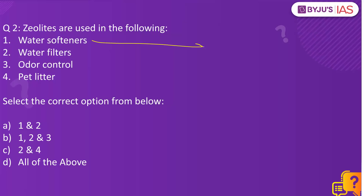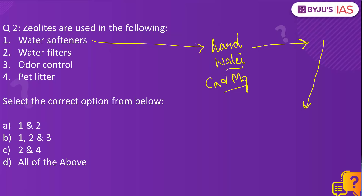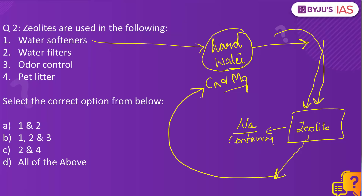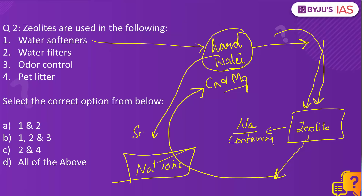Zeolites are used in water softeners. For example, take hard water containing calcium and magnesium. When this hard water is piped through a sodium-containing zeolite, because of the porous properties of zeolites, the zeolite traps the calcium and magnesium and releases sodium ions. That is how hard water becomes soft. So zeolites are used as water softeners.